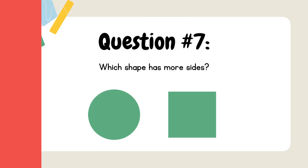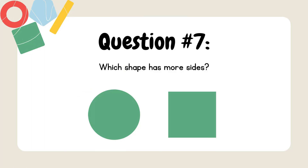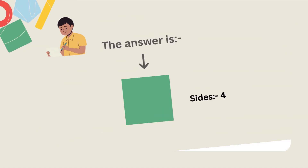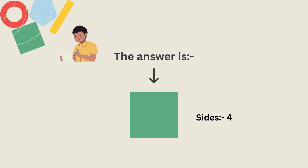Question 7. Which shape has more sides? The answer is sides equal to 4.